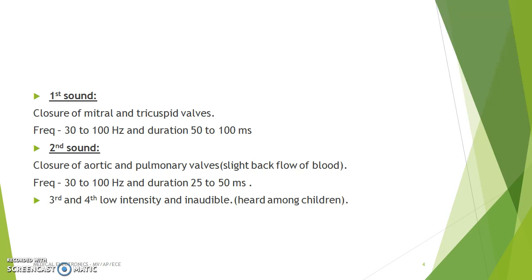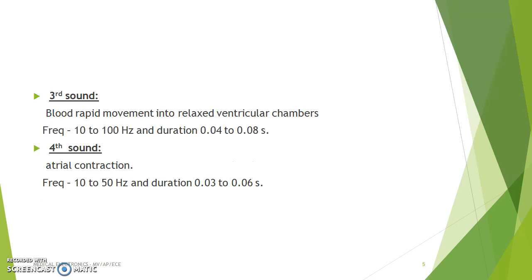The third and fourth sounds are very low intensity and inaudible, heard only among children. The third sound occurs during rapid blood movement into relaxed ventricular chambers, with a frequency range from 10 to 100 hertz and duration from 0.04 to 0.08 seconds. The fourth sound occurs during arterial contraction, which is the final sound of the heart, with a frequency range from 10 to 50 hertz and duration about 0.03 to 0.06 seconds.